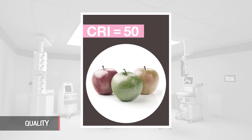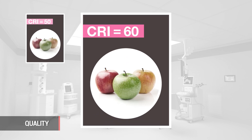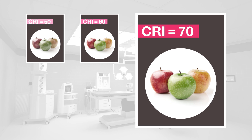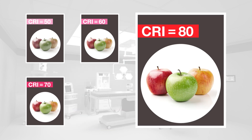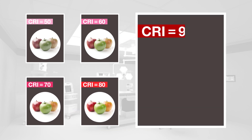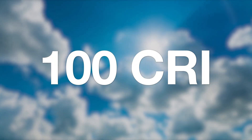Lighting quality is reported as the Color Rendering Index, or CRI. This is measured on a scale of 0 to 100 and indicates how true colors look under various light sources. Light sources with higher CRI values produce more true, saturated colors. For reference, daylight is 100 CRI.